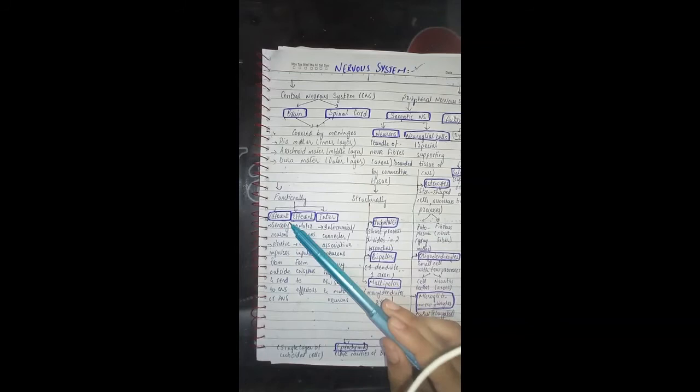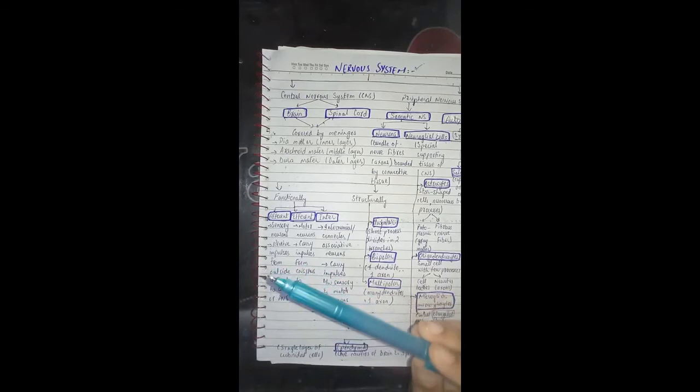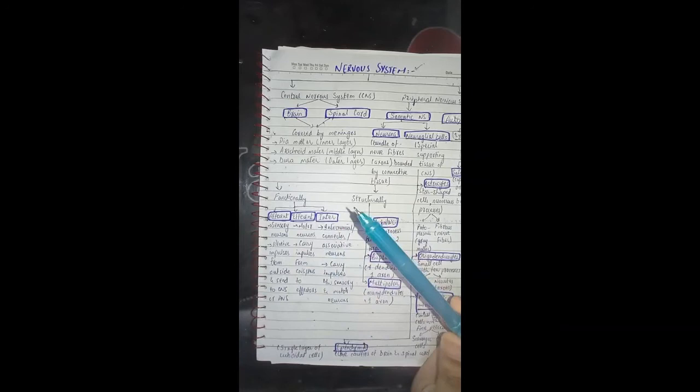Afferent neurons are called sensory neurons, which basically receive stimuli or impulses from outside the environment and carry them to the central nervous system or peripheral nervous system.